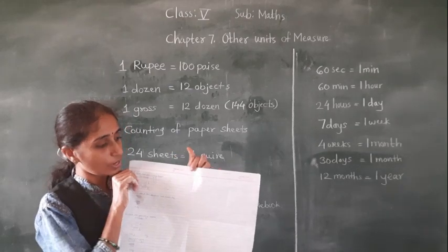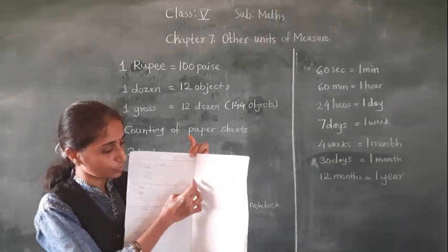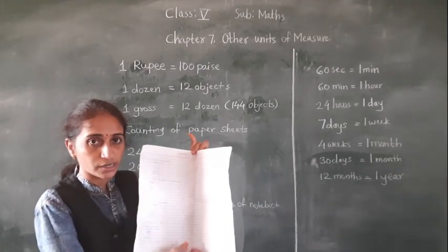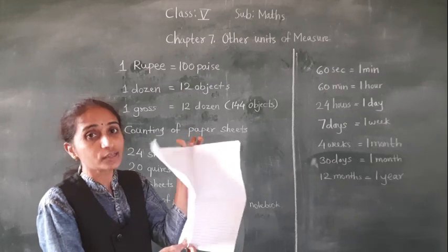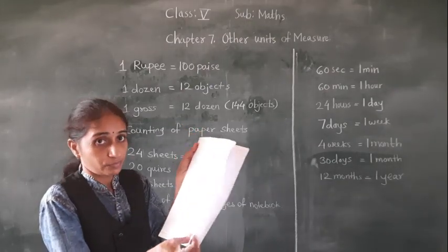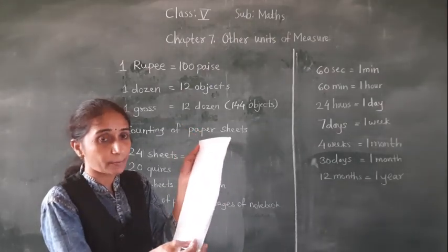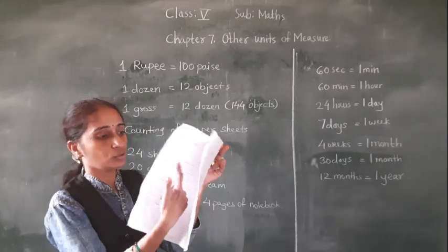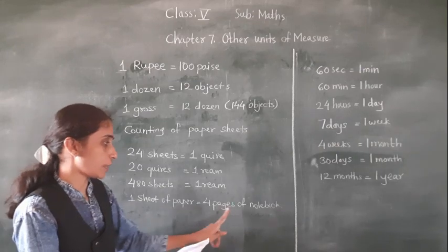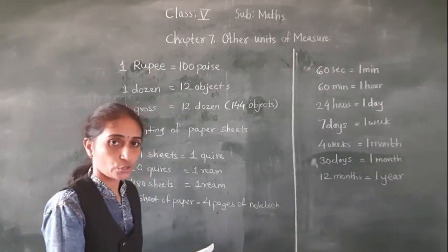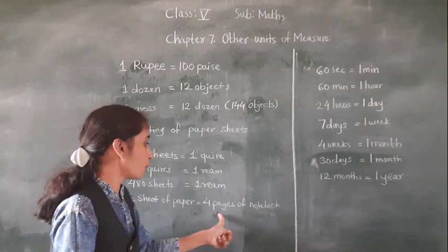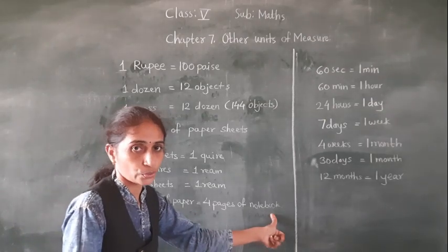Your notebook — where is it stitched? It is stitched from the middle. Now, your notebook is stitched from the middle. So for this one sheet of paper, how many pages will you get? One, two, three, four. A sheet of paper means 4 pages of notebook.